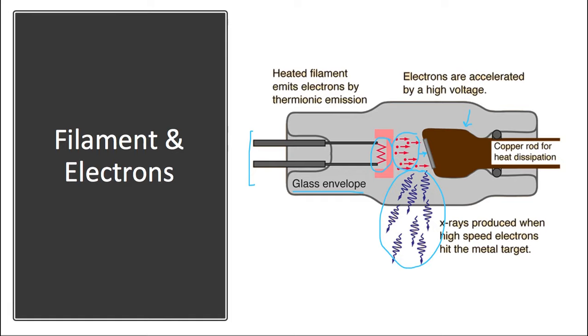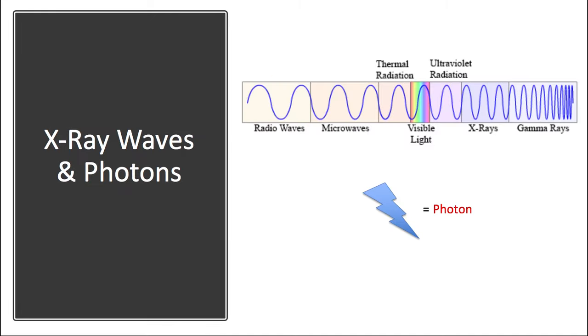So electricity becomes heat which becomes electrons which become x-rays. X-rays are high-frequency, high-energy waves. They're between ultraviolet radiation and gamma rays on the electromagnetic spectrum. And it's helpful to think of x-rays as similar in some respect to visible light rays because all of these waves are packaged into energy particles called photons.